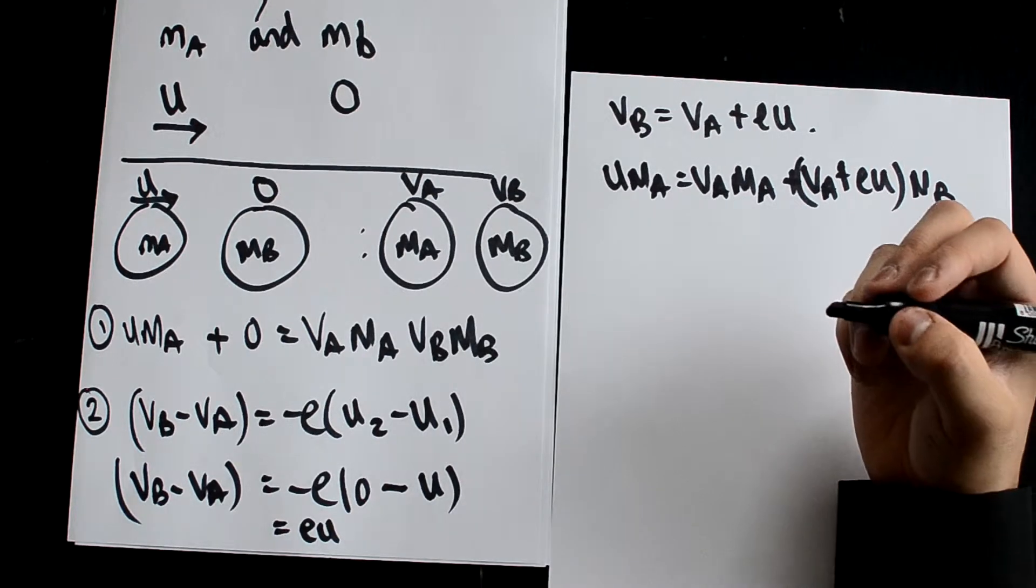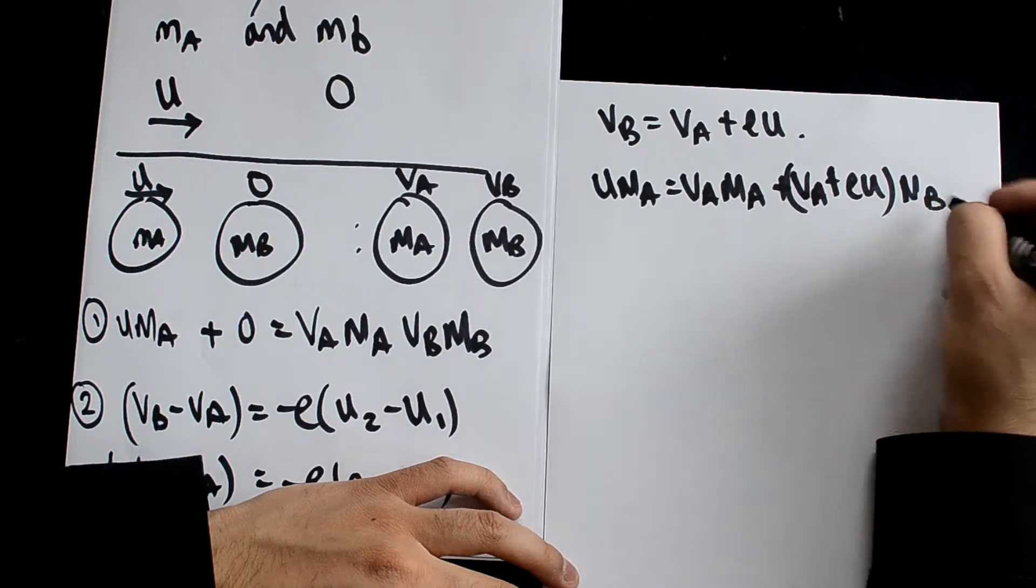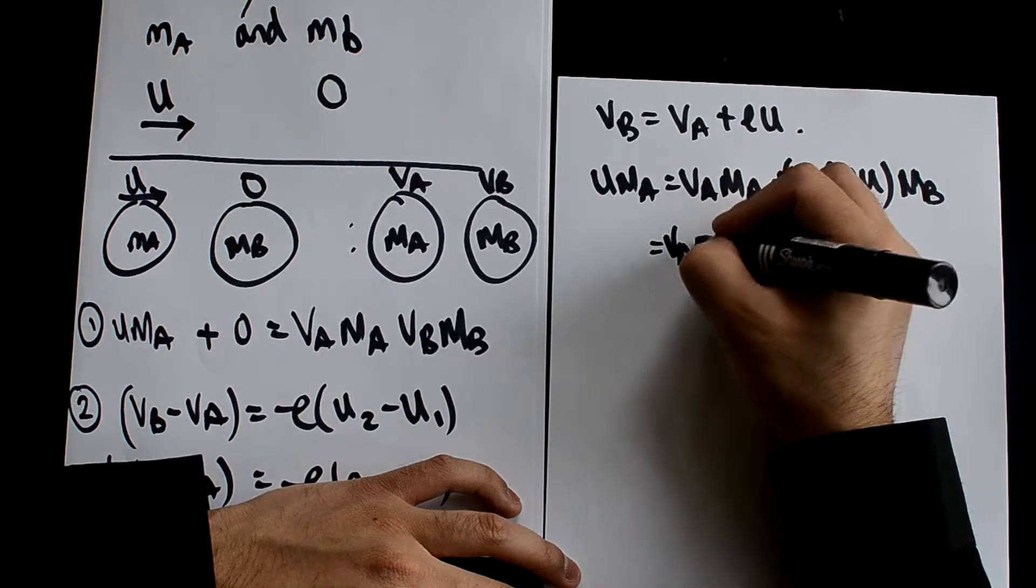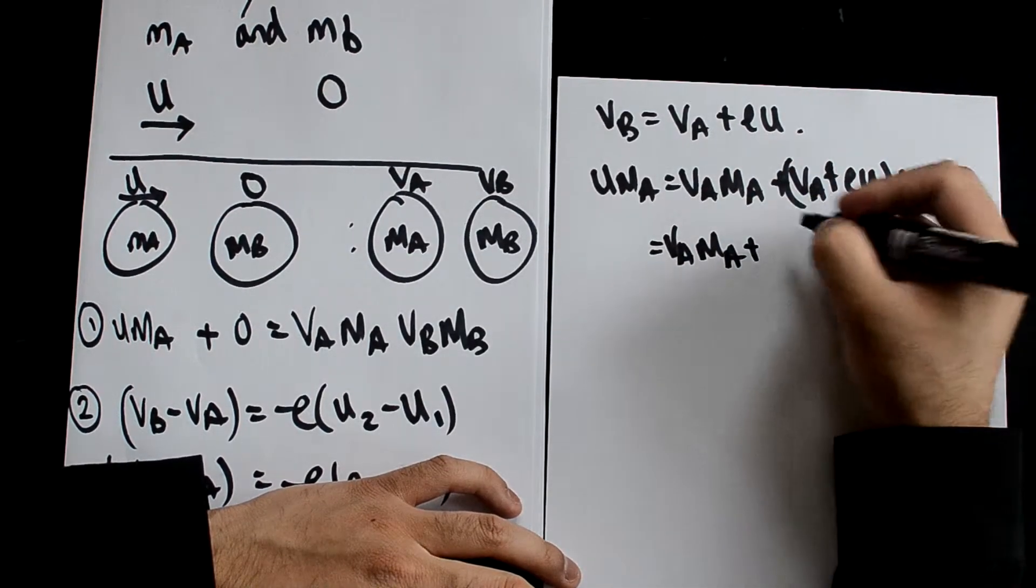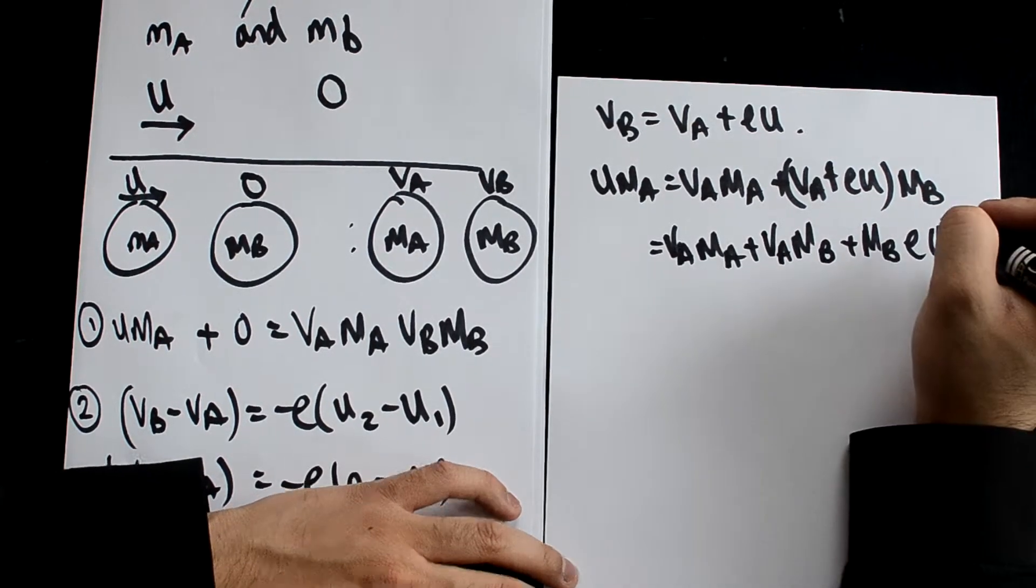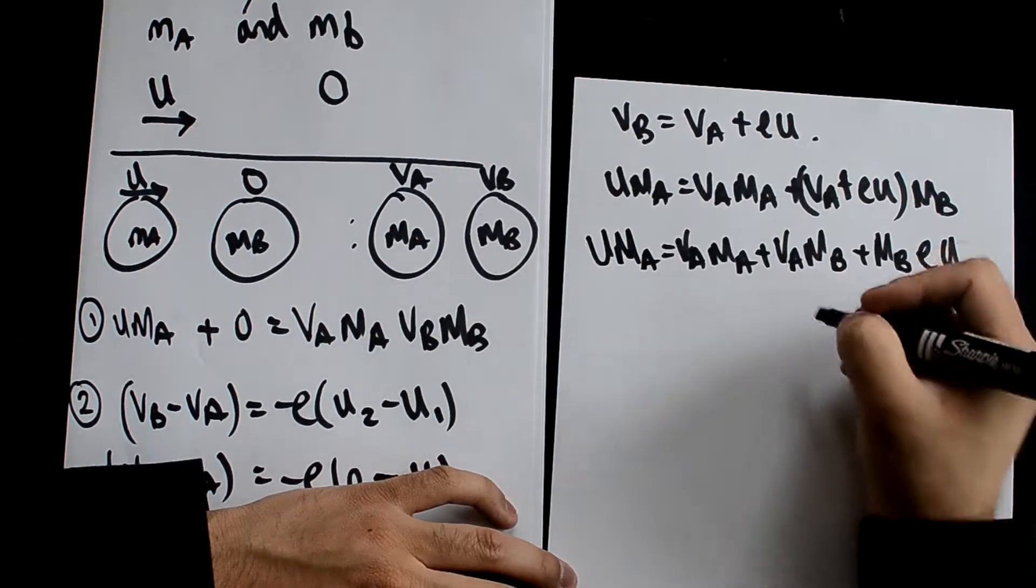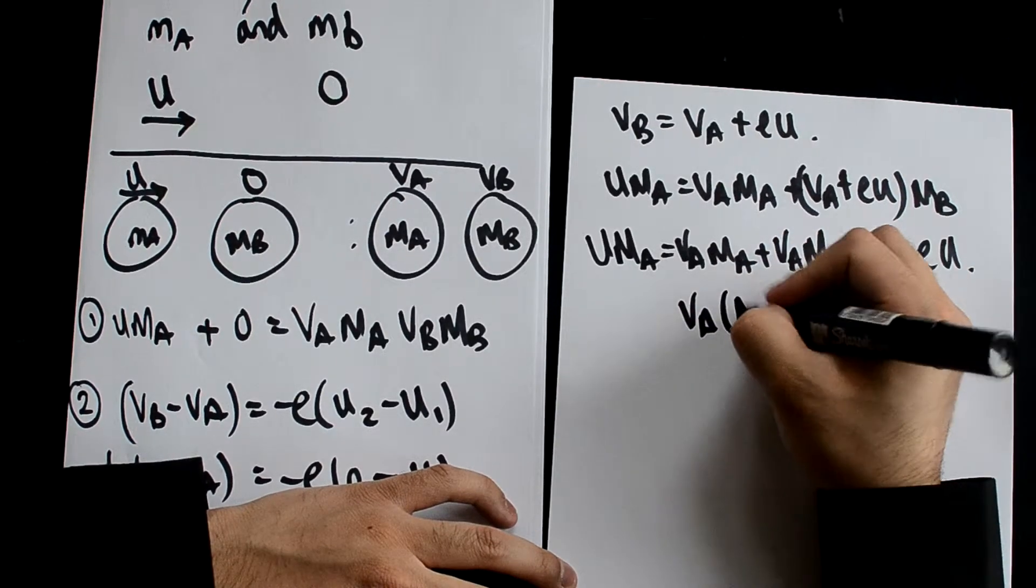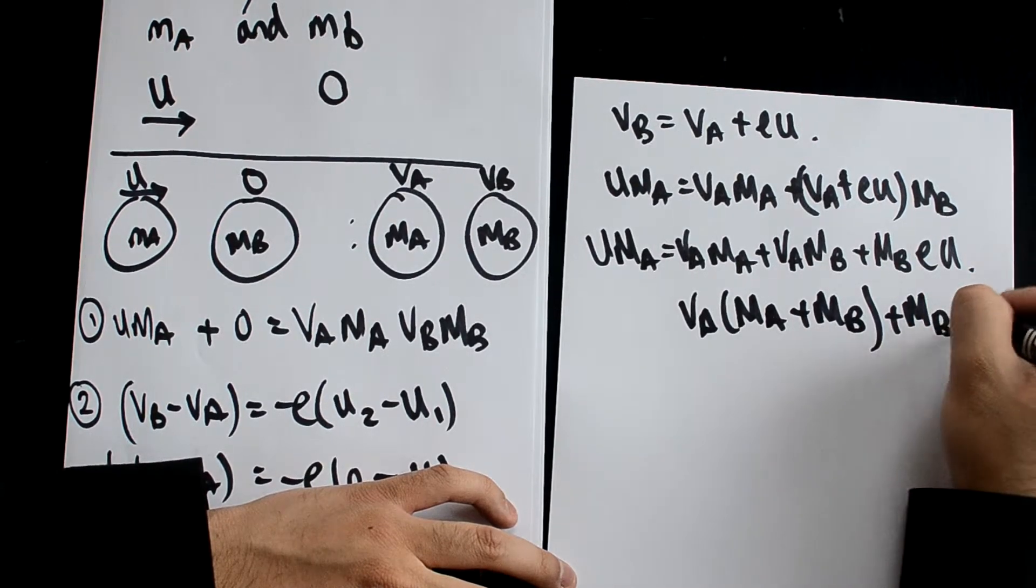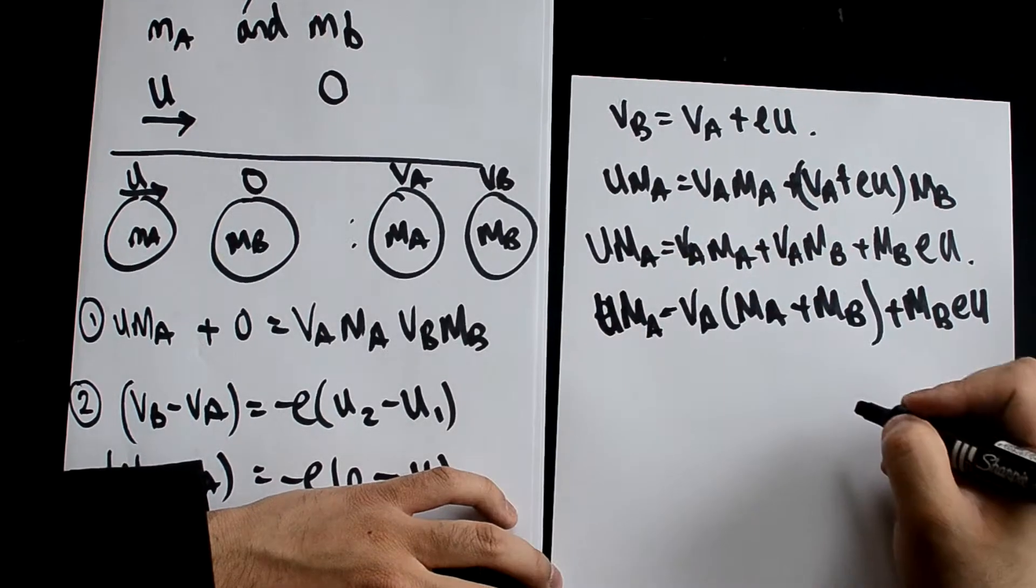This is now just simple algebra, rearranging and moving things around. I'll do this relatively quickly. We're going to expand the brackets here first. So we'll get u ma equals va ma plus va mb plus mb e u. We need to find what the va's are.